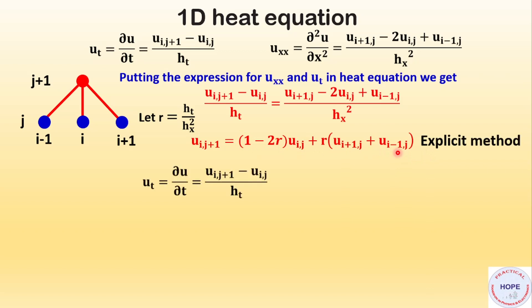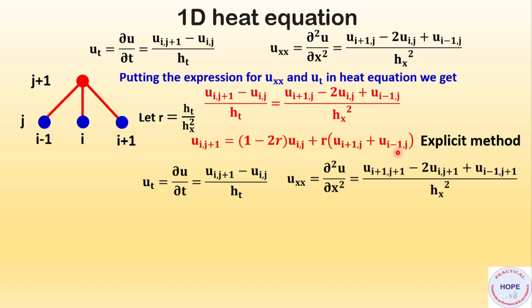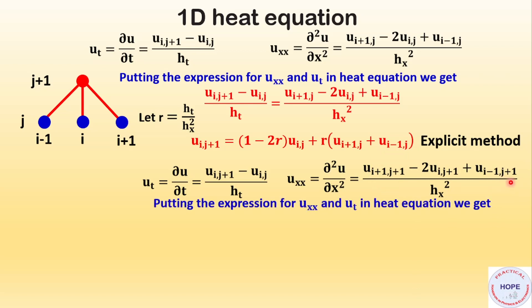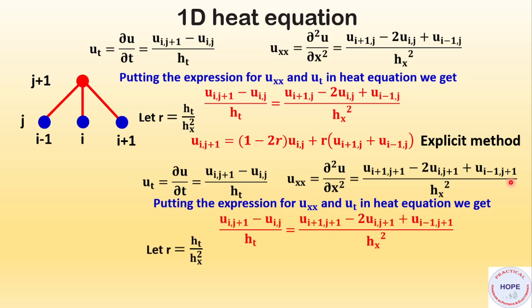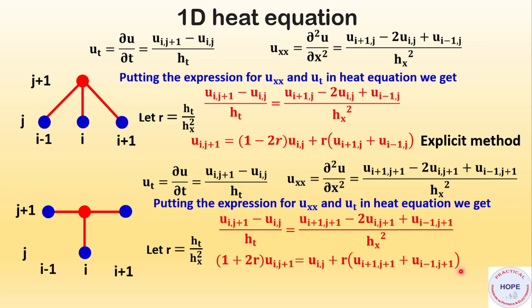We can also consider a second case. Taking u_xx at time index j+1 and substituting into the heat equation, with r equal to h_t divided by h_x squared, u(i, j+1) is calculated from u(i, j), u(i+1, j+1), and u(i-1, j+1). This is the simple implicit method.